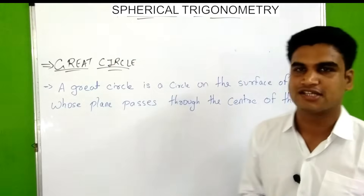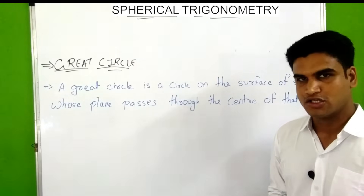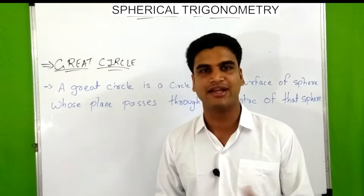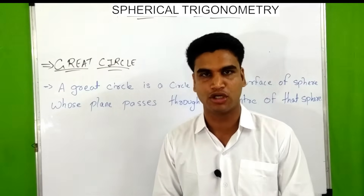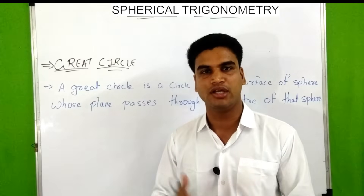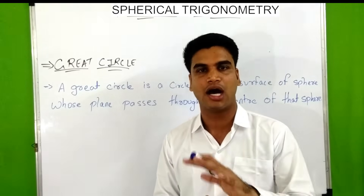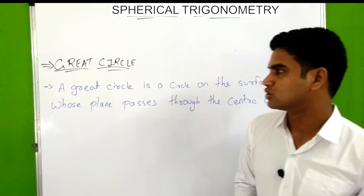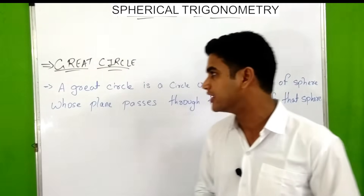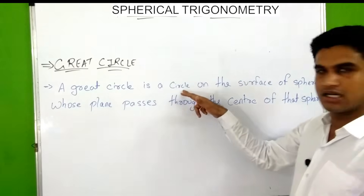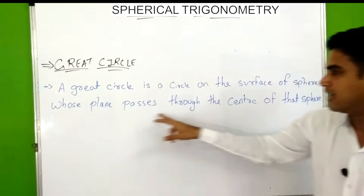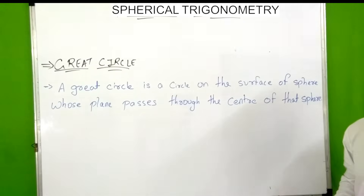Now we will discuss spherical trigonometry. Spherical trigonometry is applied on spherical triangles, and spherical triangles are different from plane triangles because the sides of spherical triangles are not straight lines but are actually curved lines — they are arcs of great circles. A great circle is an important term in spherical trigonometry.